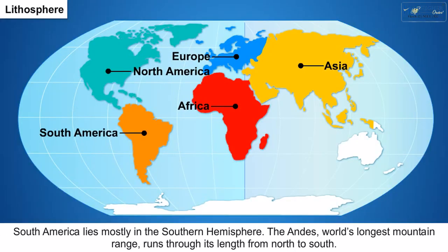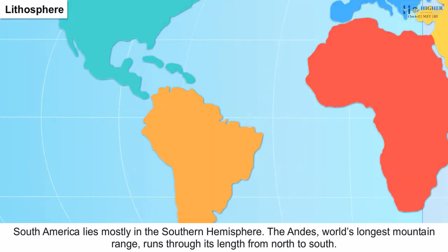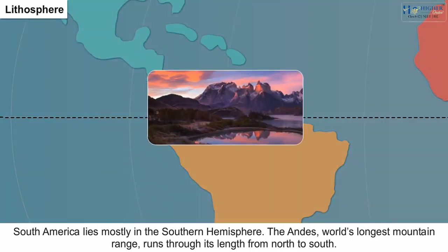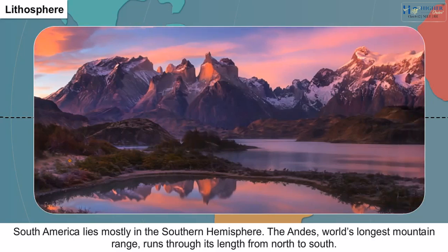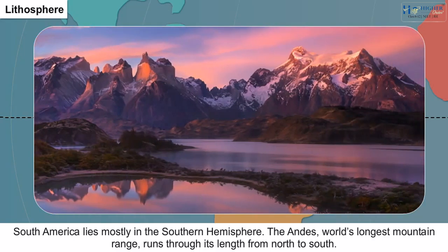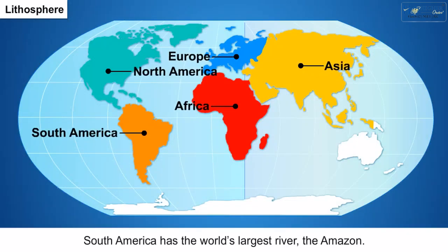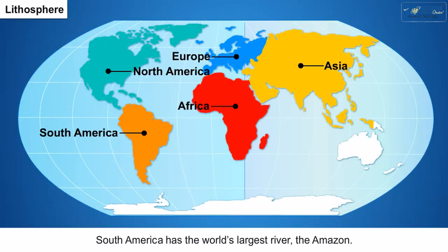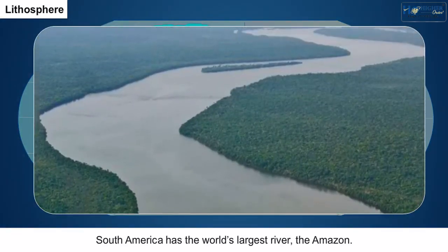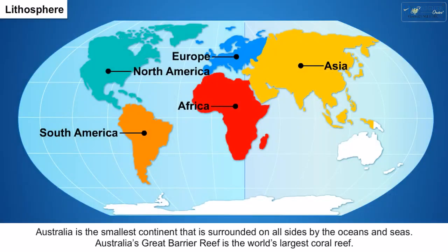5. South America lies mostly in the southern hemisphere. The Andes, the world's longest mountain range, runs through its length from north to south. South America also has the world's largest river, the Amazon.